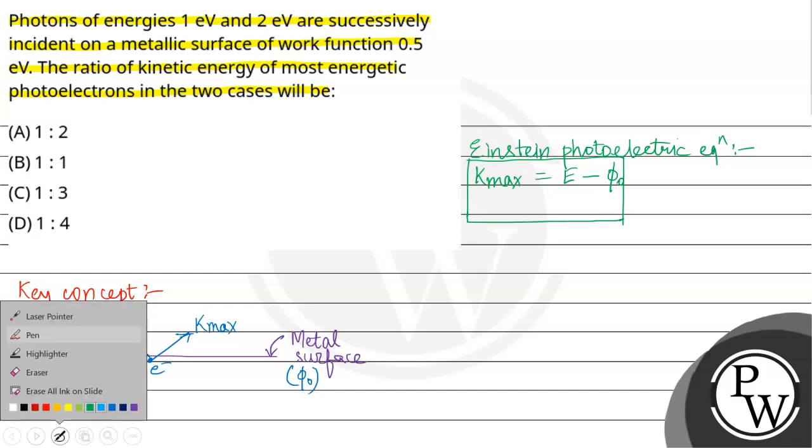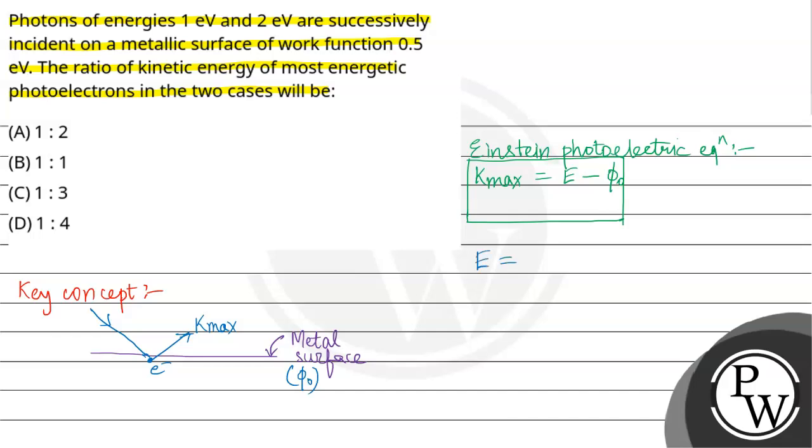Now, incident energy is hc/λ or hf. Work function is hc/λ₀ or hf₀. Lambda naught or f naught are threshold wavelength and threshold frequency respectively.